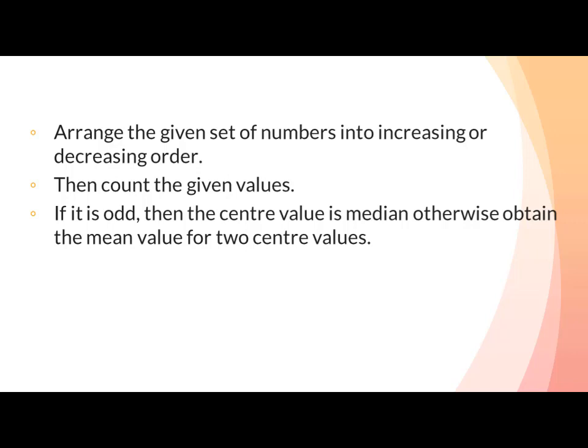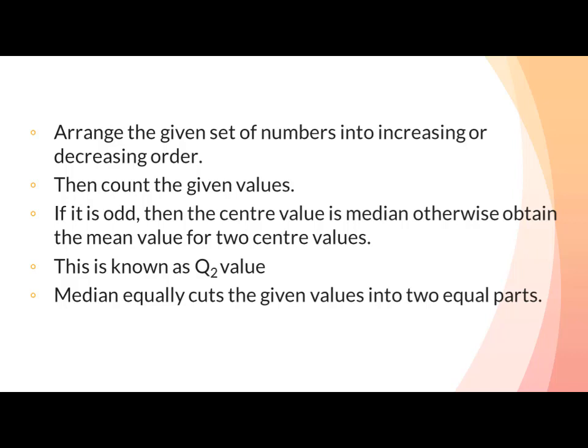Mean کے لیے دونوں central values کو plus کریں گے اور پھر two پر divide کریں گے — یہ اس data set کا median ہوگا، جو Q2 value ہے۔ Median equally cuts the given values into two equal parts — data set کو دو equal حصوں میں تقسیم کرتا ہے، جنہیں Q1 part اور Q3 part کہتے ہیں۔